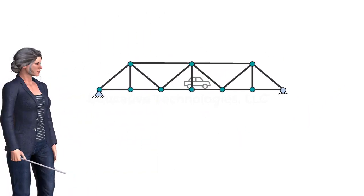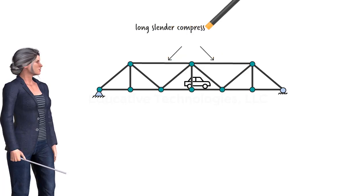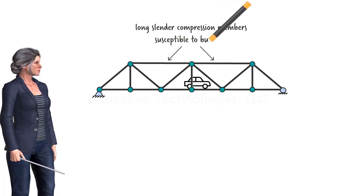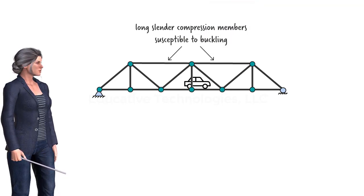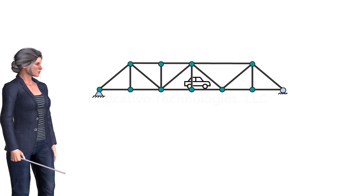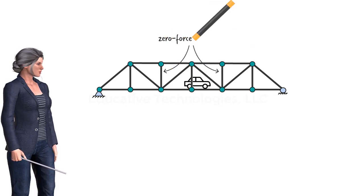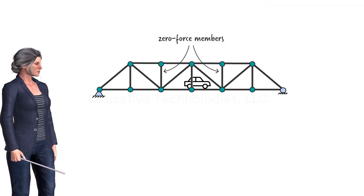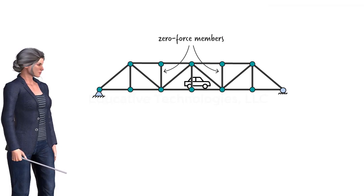There is another reason for having zero force members in trusses. A long slender truss member subjected to a large compressive force could fail prematurely due to what is known as buckling. To prevent such a failure, additional truss members could be added to the structure in order to brace the compression member, effectively shortening its buckling length. These members often carry no significant axial force, therefore they are treated as zero force members.